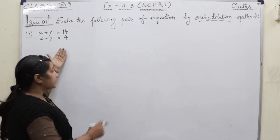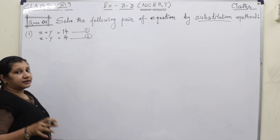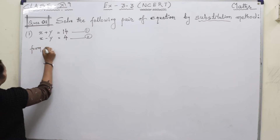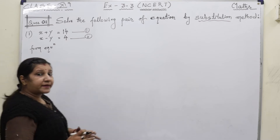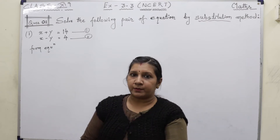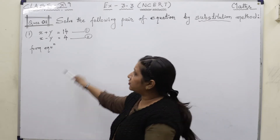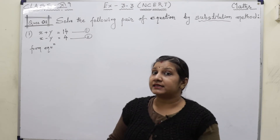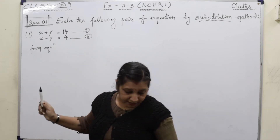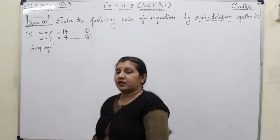We have two equations given to us. I am going to show you a trick to make the problem easier. The first equation is x plus y equals 14, and the second equation is x minus y equals 4. Notice the minus sign in equation number 2. We will start with the substitution method, beginning with the second equation.